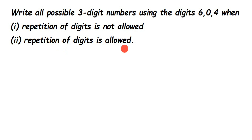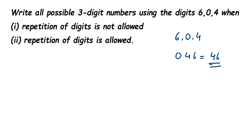We have 6, 0, and 4. Since we have zero, if I start the number with zero followed by two numbers like 4 and 6, that number equals 46 — it's a two-digit number, not a three-digit number. So we cannot start a number with zero.